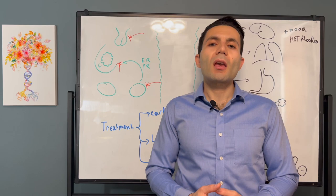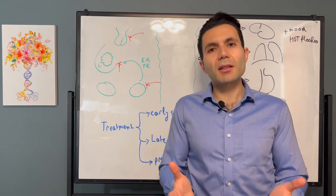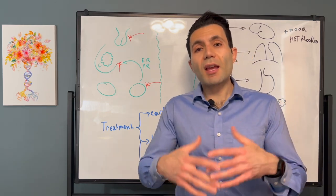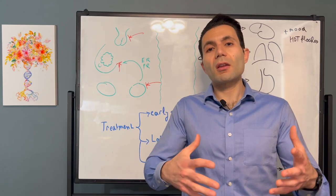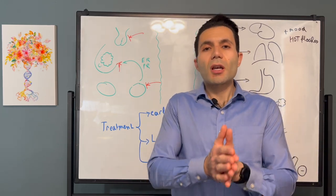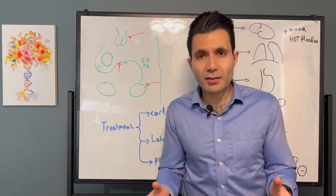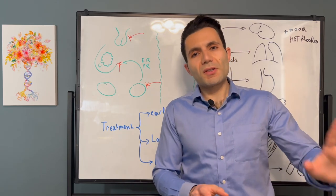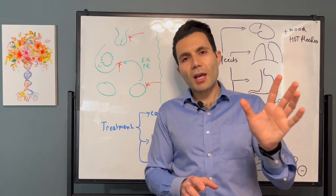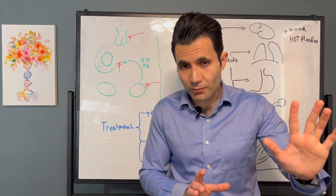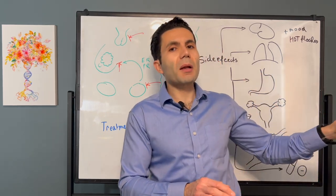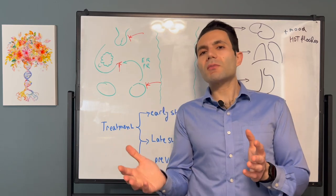During adult life, estrogen and progesterone, which are the two main female sex hormones, help to maintain the secondary characteristics. So this is the normal physiology of how hormones act on normal breast tissue.